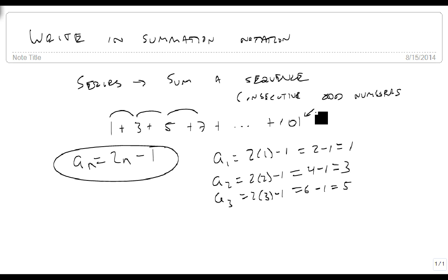So now all I need to do is figure out what gives this. So a of what, or what n, gives 101? 2 times what n minus 1? Well, add 1, that's 102 equals 2n, when we divide by 2, n is 51.